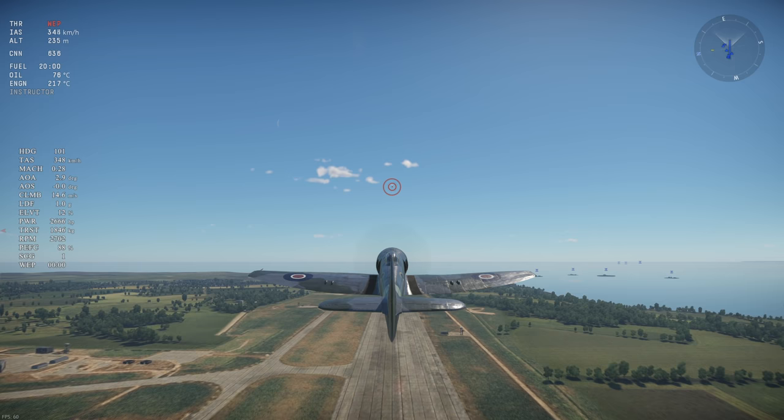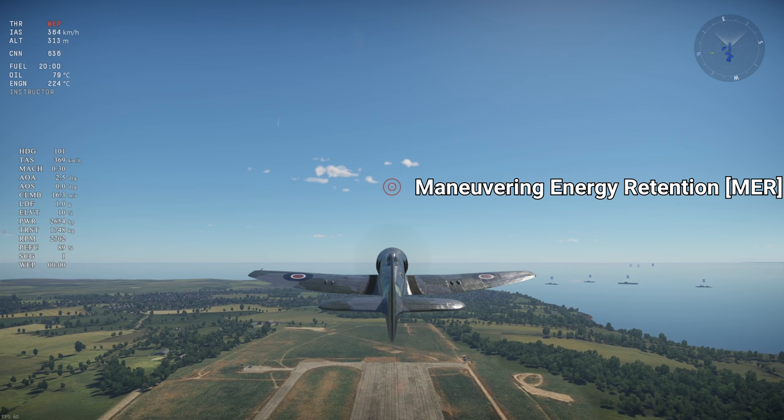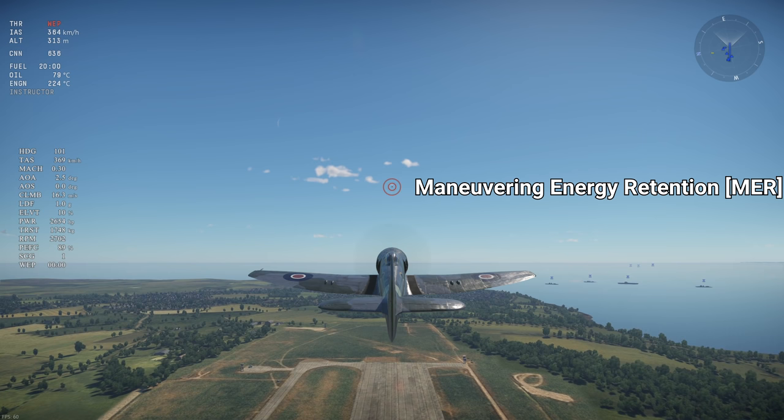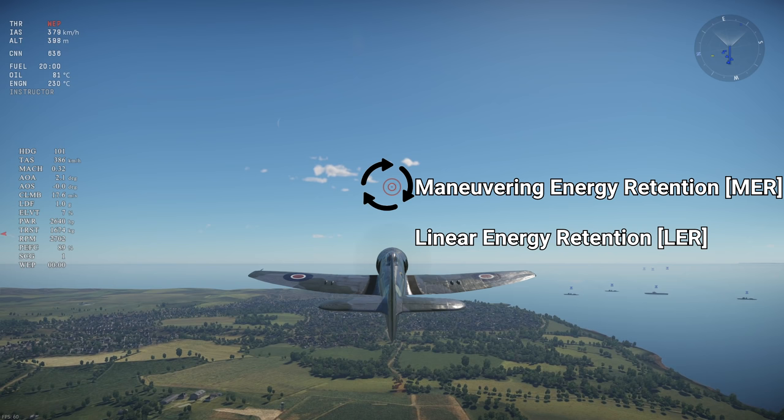Energy retention is a measure of an aircraft's ability to retain energy, such as speed and altitude. There's two categories of energy retention: maneuvering energy retention, which is the energy retention when turning, and linear energy retention, which is the energy retention when going in a straight line.